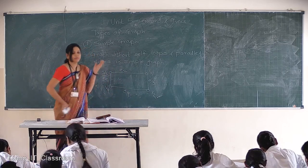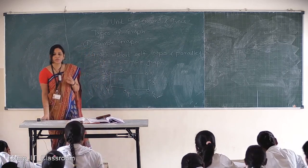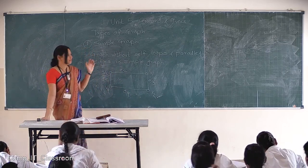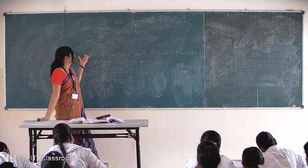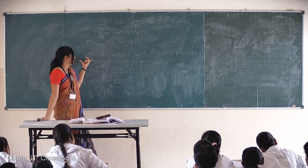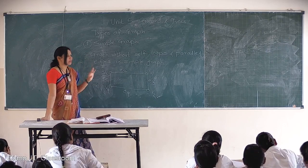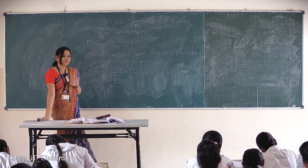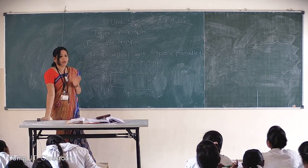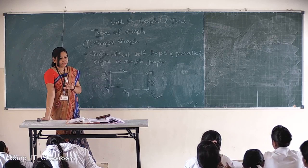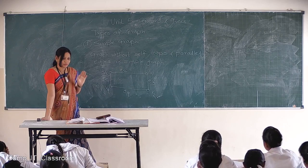Now, there are various types of graphs. The first graph is simple graph. The graph which is not having any self-loop or parallel edges is called a simple graph.